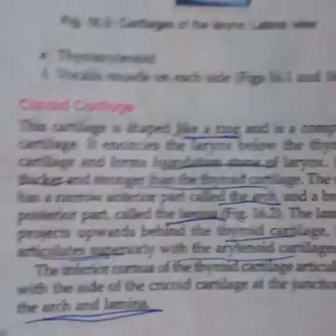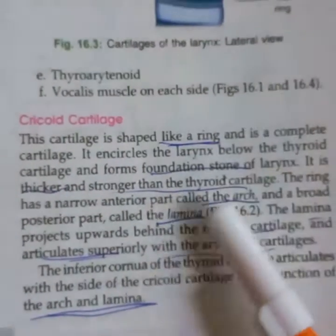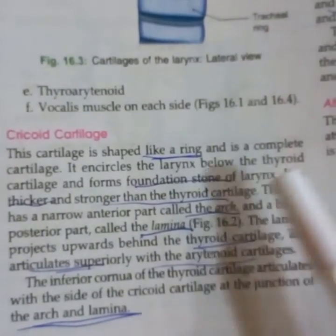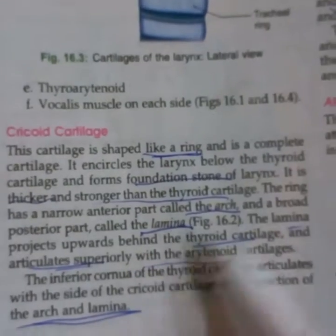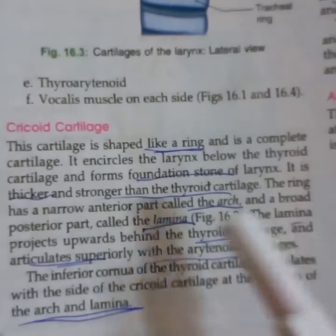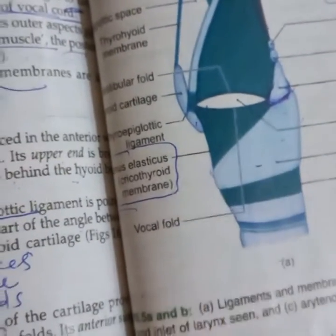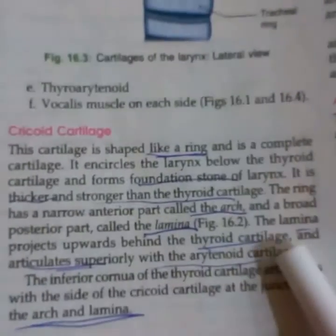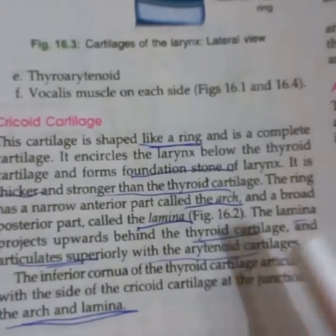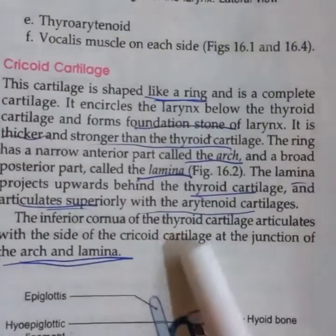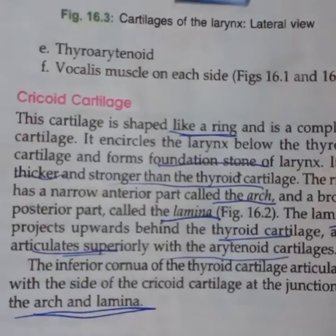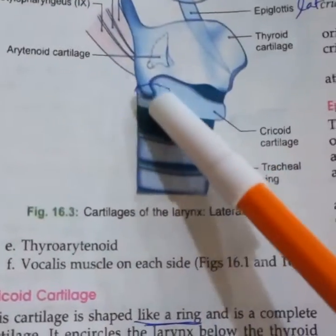The cricoid cartilage is ring-shaped and is the only complete cartilage of the larynx. It has a narrow anterior arch and a broader posterior lamina. The upper part of the lamina projects behind the thyroid cartilage and articulates with the arytenoid cartilage. The sides of the lamina and arch create the cricothyroid joint.